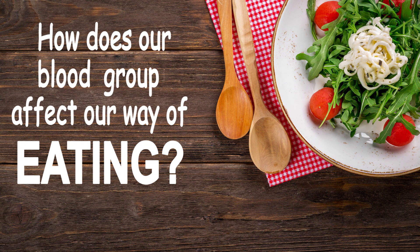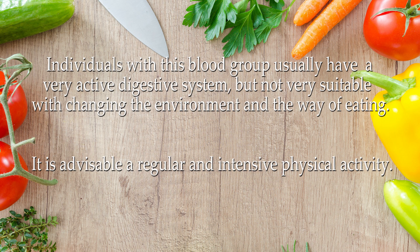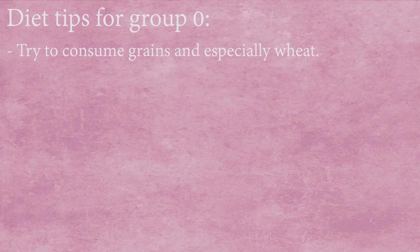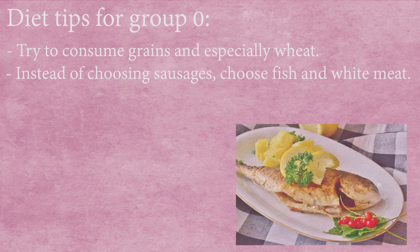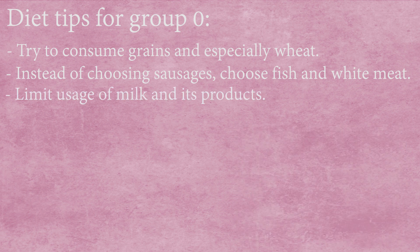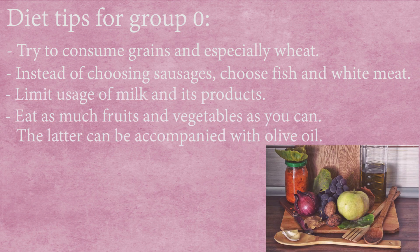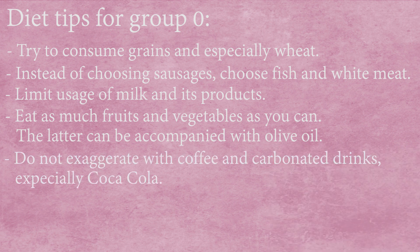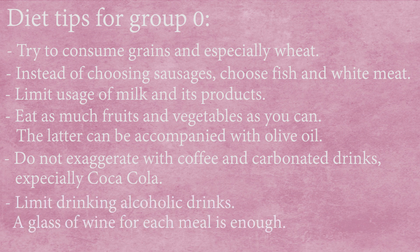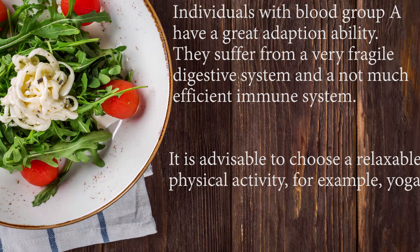Our blood group is also an important element affecting the way we eat. Group O individuals have a very active digestive system but are not very adaptable to changes in diet. Regular and intensive physical activity is advisable. Diet tips: consume grains and especially wheat; choose fish and white meat over sausages; limit milk products; eat plenty of fruits and vegetables with olive oil; and limit coffee, carbonated drinks, and alcohol.